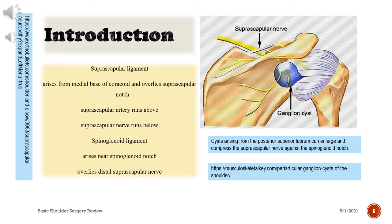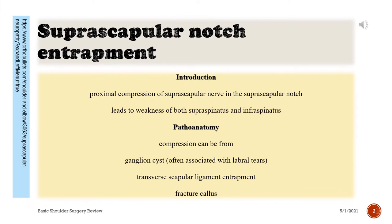Cysts arising from the posterior superior labrum can enlarge and compress the suprascapular nerve against the spinoglenoid notch. Suprascapular Notch Entrapment: proximal compression of the suprascapular nerve in the suprascapular notch leads to weakness of both supraspinatus and infraspinatus.